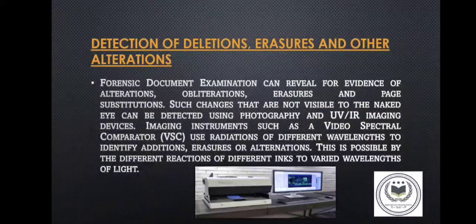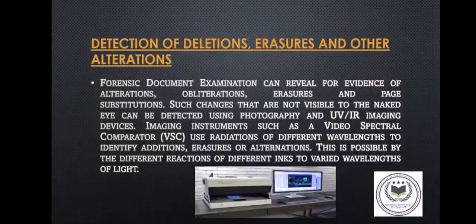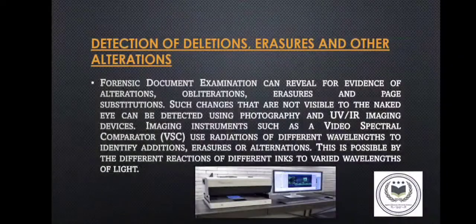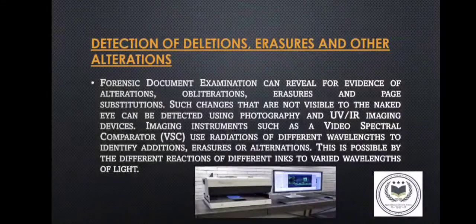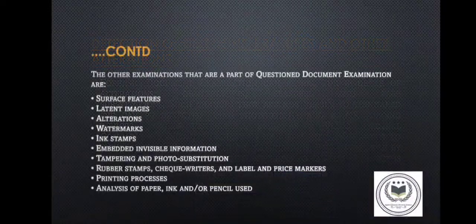Detection of Deletions, Erasures and Other Alterations: Forensic document examination can reveal evidence of alterations, obliterations, erasures, and page substitutions. Such changes that are not visible to the naked eye can be detected using photography and UV-IR imaging devices. Imaging instruments such as a Video Spectral Comparator (VSC) use radiations of different wavelengths to identify additions, erasures, or alterations, made possible by the different reactions of different inks to varied wavelengths of light.